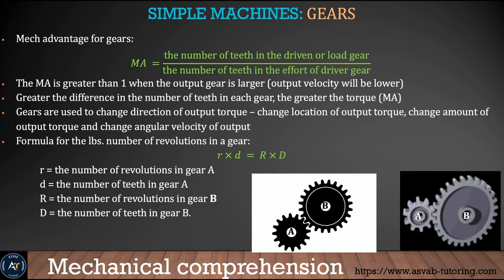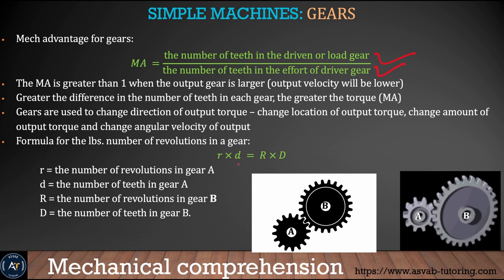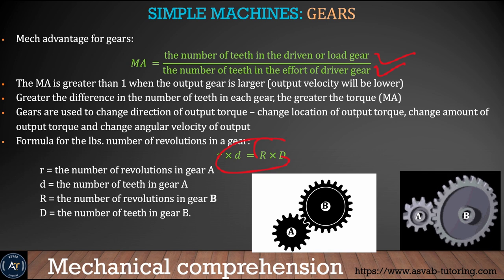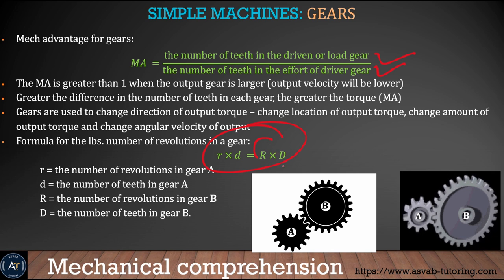The mechanical advantage of a gear is the number of teeth in the driven or load gear over the number of teeth in the effort or driver gear. There is also a relationship between the number of teeth and the number of rotations: R1 × D1 = R2 × D2. You can use this equation to find the number of teeth and the number of revolutions for bigger or smaller gear systems.